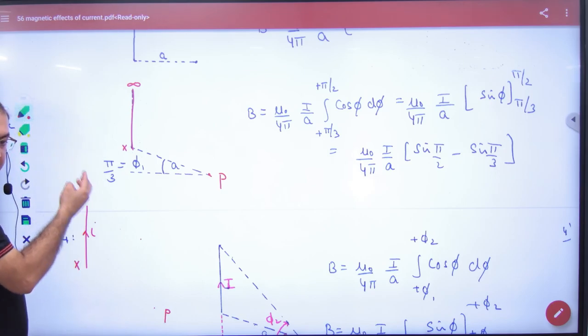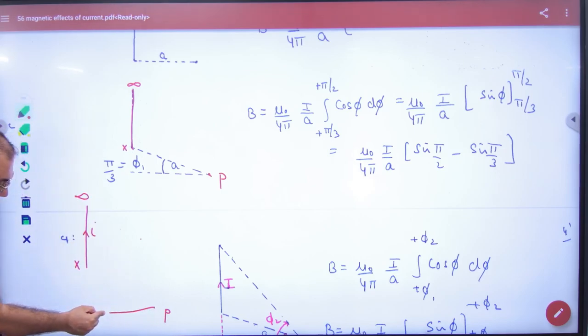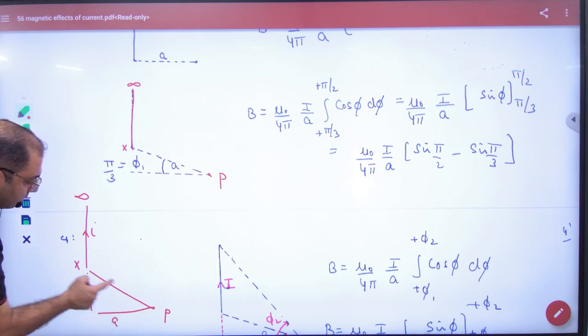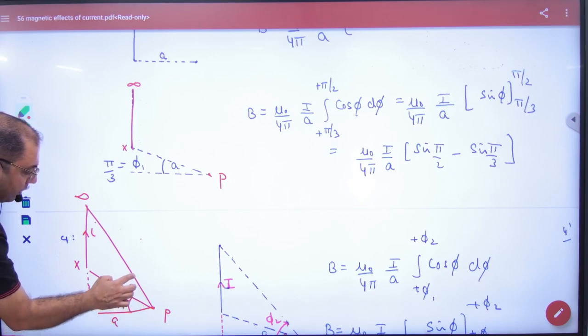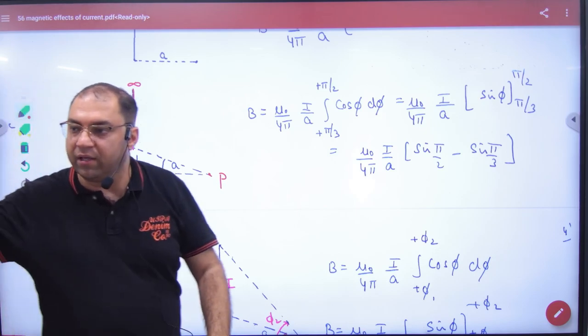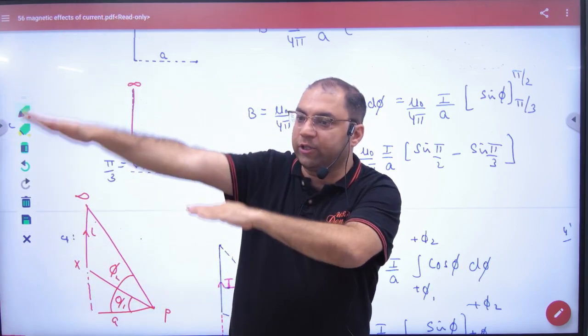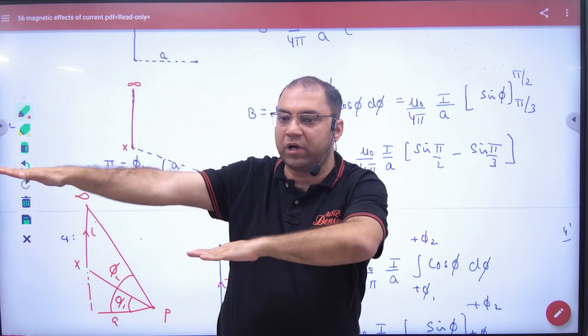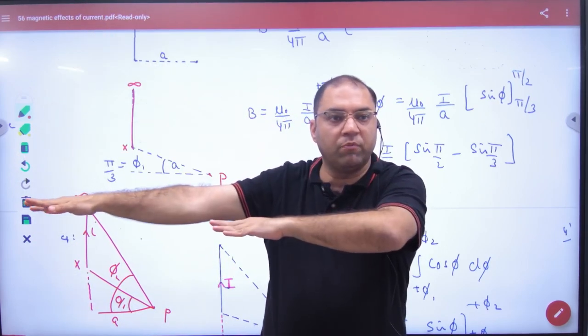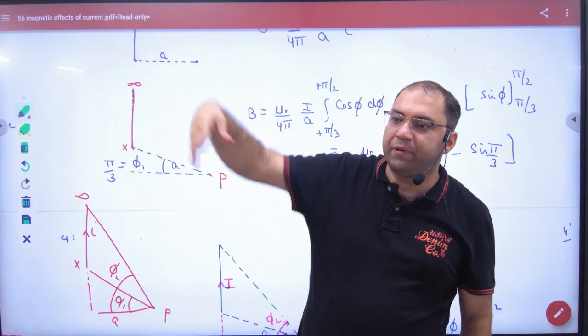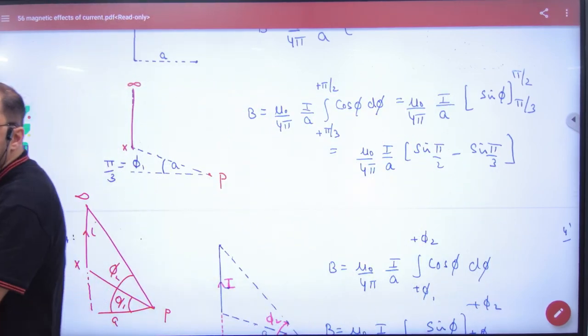The wire, both ends are beyond this point P at perpendicular distance a. So both endpoints are on this line. So if phi1 is in the limit, then phi1 will be positive and phi2 will be positive, because both points are on the same side. If both points are on this side, then plus phi1 and phi2.